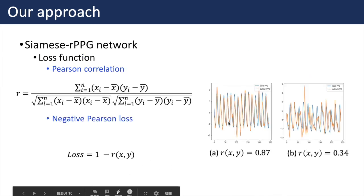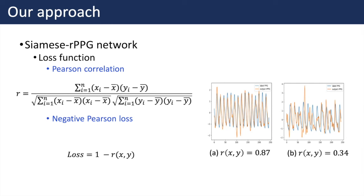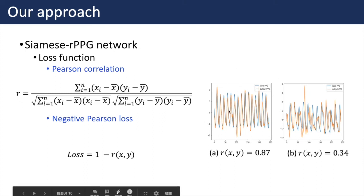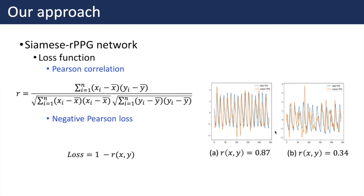Here, we present the loss function of our proposed method. We use the PPG signal as the ground-truth label. PPG, or photoplethysmography signal, is an optically obtained signal usually acquired through contact devices on a subject's finger. We use Pearson correlation to calculate the similarity between the RPPG and the label PPG. The orange curve represents the output RPPG signal, while the blue curve represents the ground-truth PPG. The figure on the left shows a well-predicted RPPG signal that is highly correlated with the ground truth.